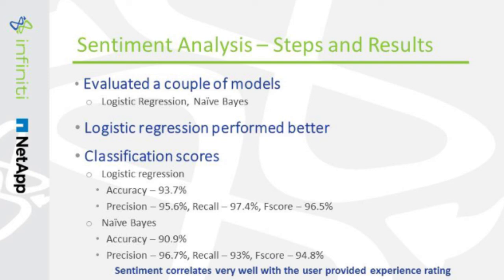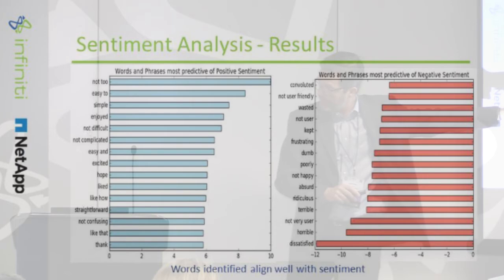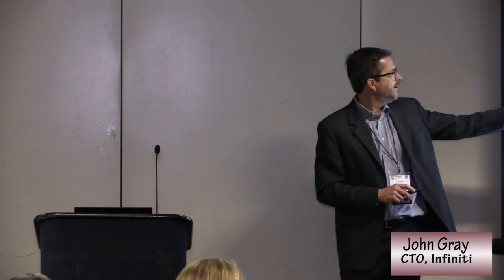The sentiment correlates very well with the user-provided rating. Along with the text, users also provided ratings from one to five on how much they liked the process. We could really see that the sentiment correlated well with those ratings. Some of the words and phrases identified as negative include: convoluted, not user-friendly, dissatisfied — kinds of things you might expect. To confirm the model was working effectively, you also identify positive analysis, which comes up with words like 'not complicated' and 'enjoyed' — that's another way of gauging that the model was working effectively.